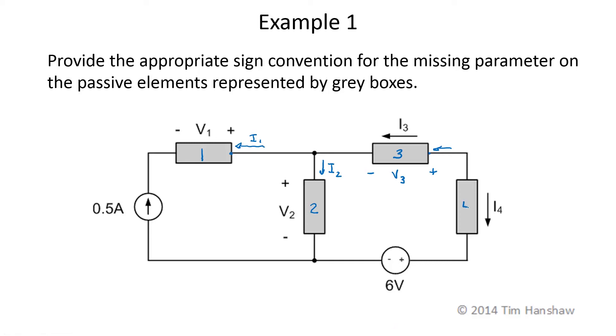Finally, for element 4, current is assumed to be entering the upper terminal. I need to make that terminal the positive voltage terminal, so for V4, current will be entering this positive terminal.